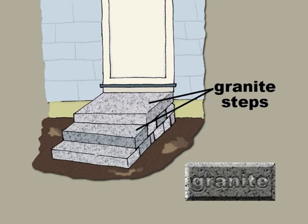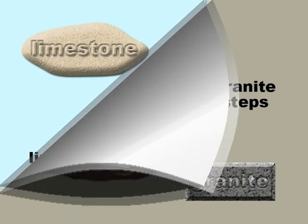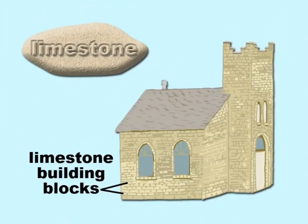Granite is very hard and does not wear down easily, so it is used for steps to buildings. And limestone is soft, so it can be cut and shaped easily to make the building blocks of buildings.